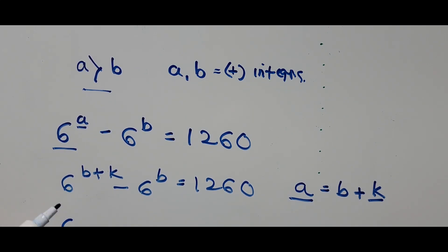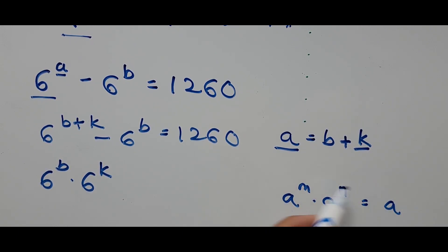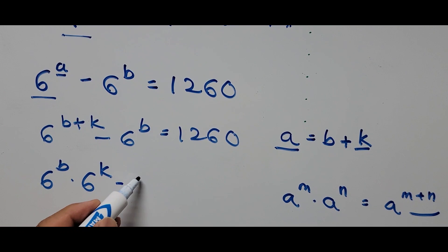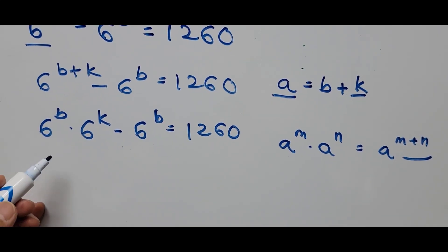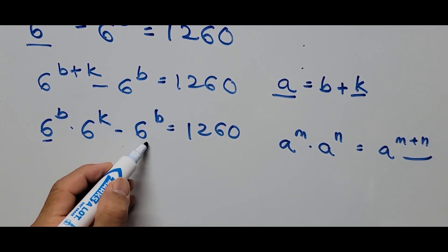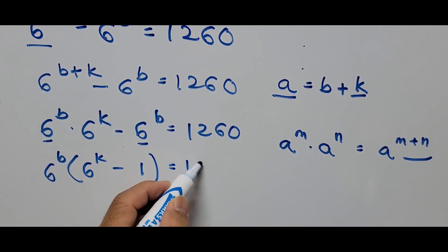Using the exponent rule — A raised to M times A raised to N equals A raised to M plus N — we expand: 6 to the power B times 6 to the power K minus 6 to the power B equals 1260. Factoring out 6 to the power B gives us 6 to the power B times the quantity 6 to the power K minus 1 equals 1260.